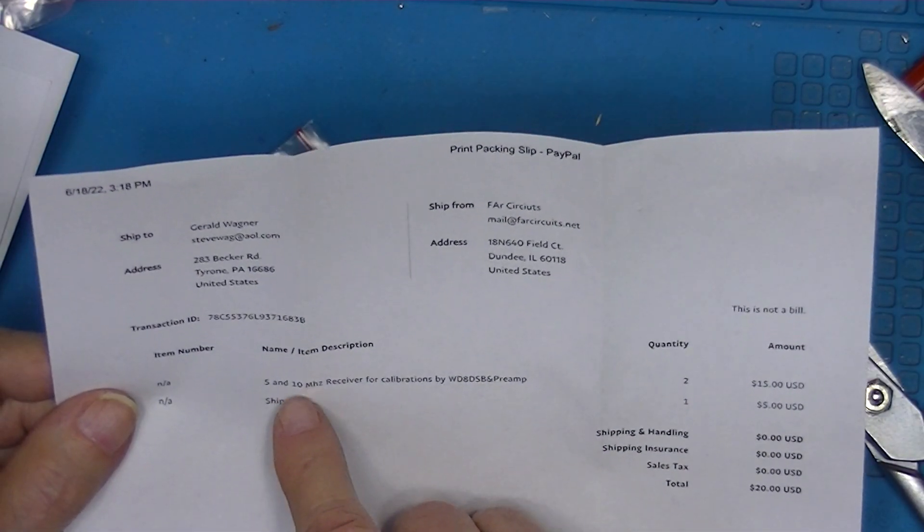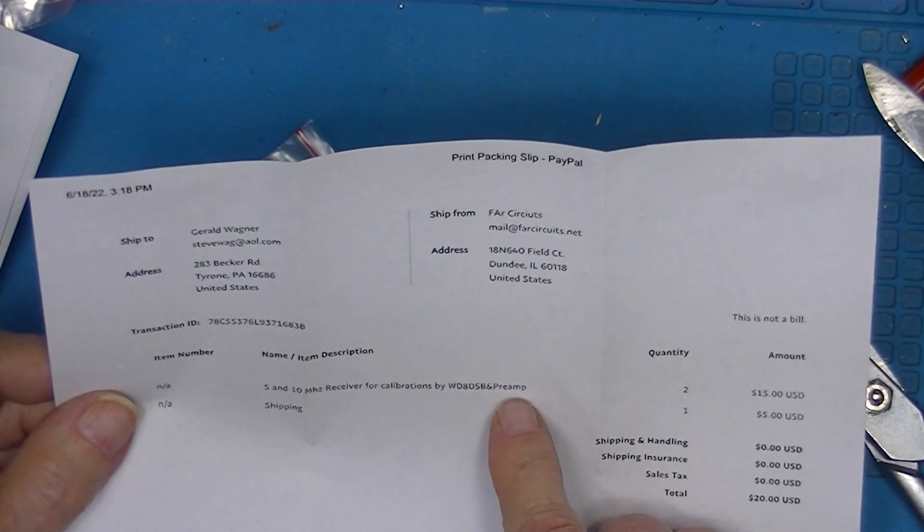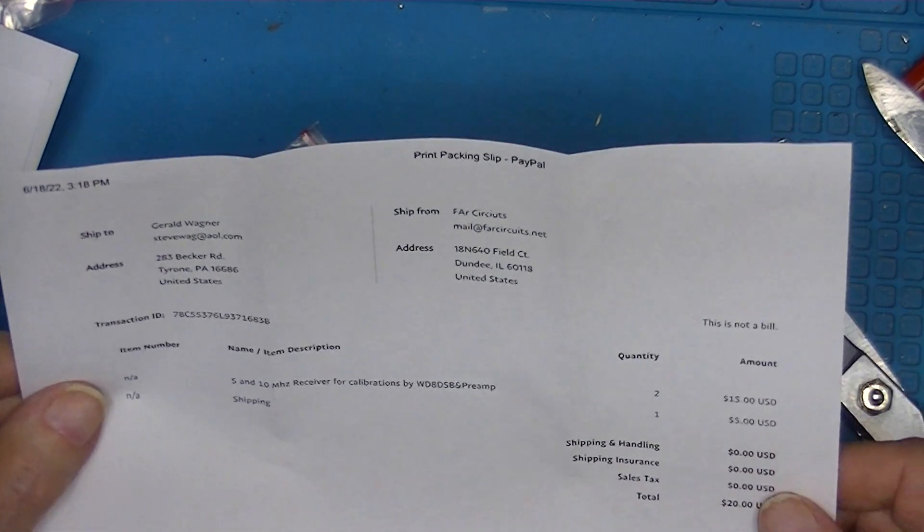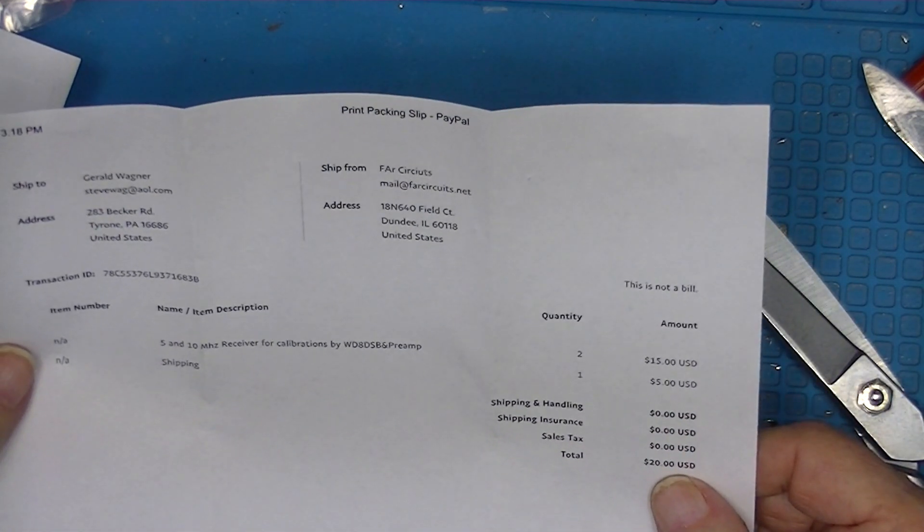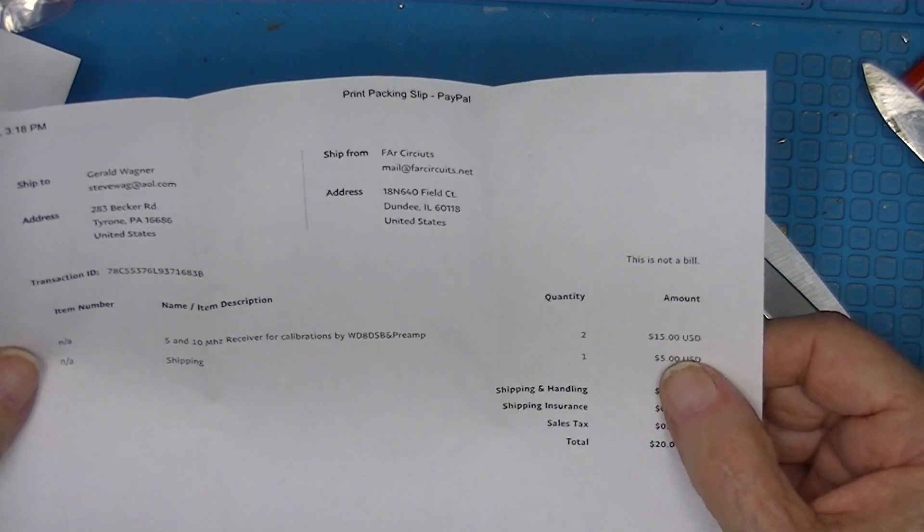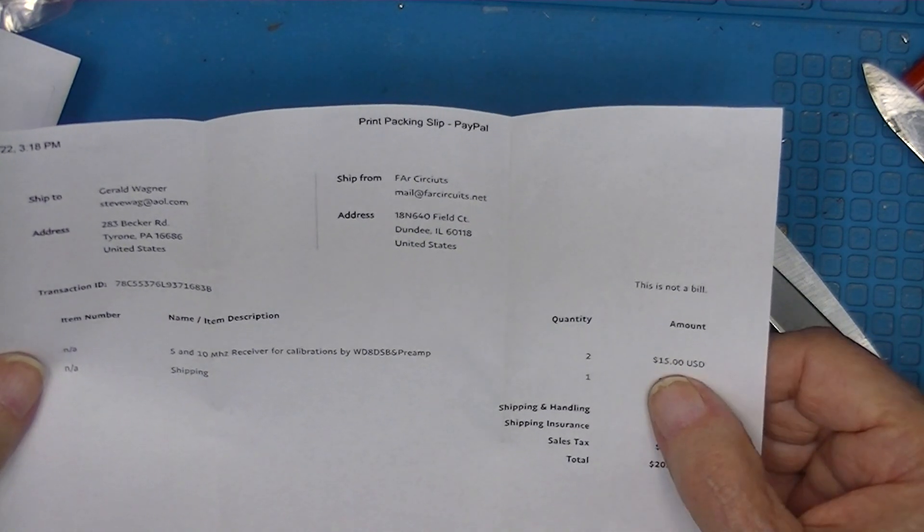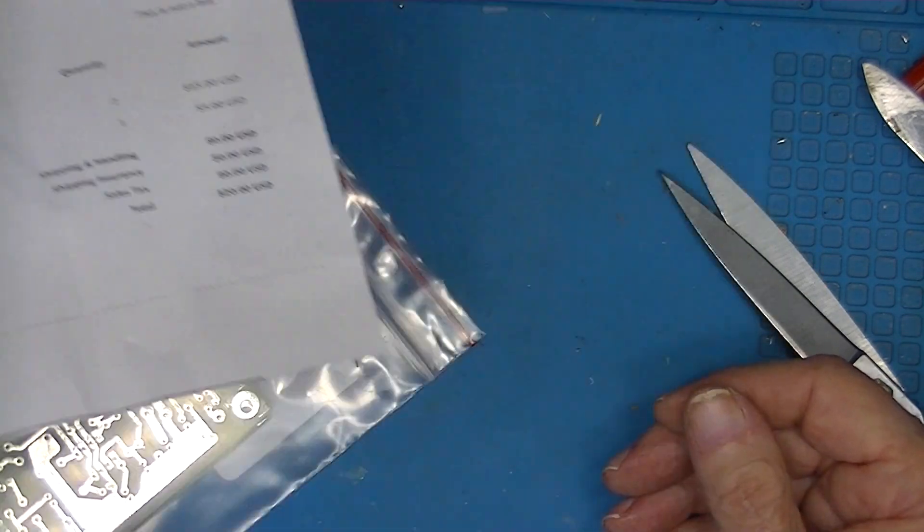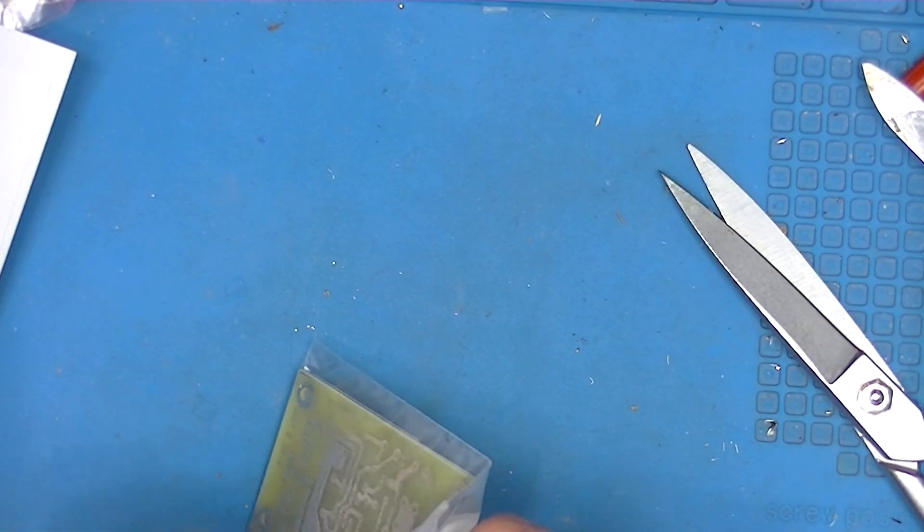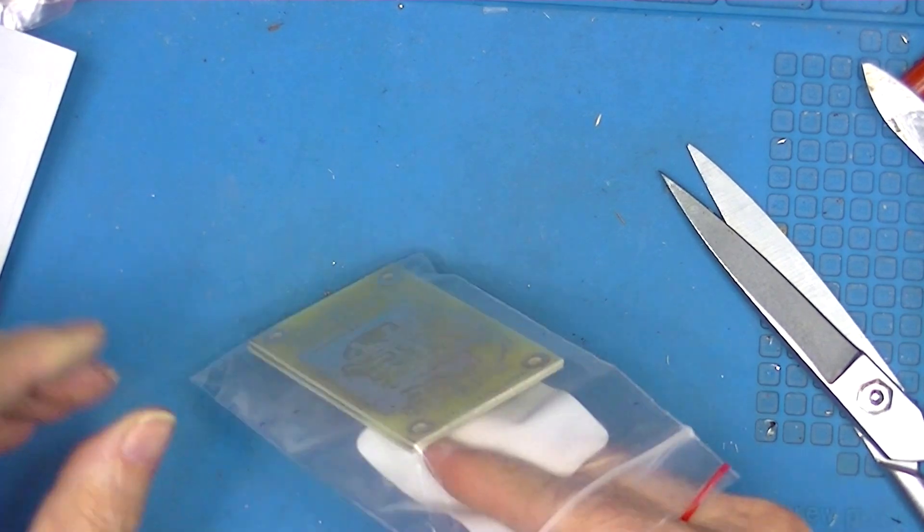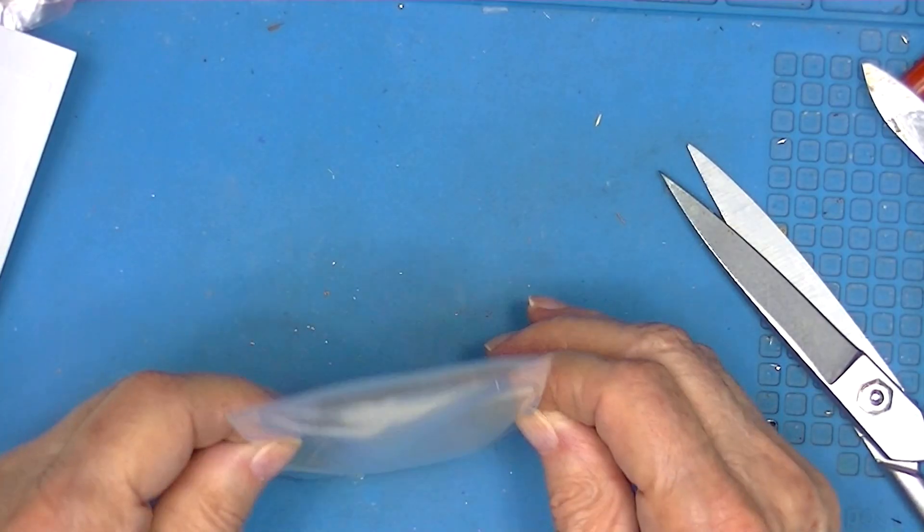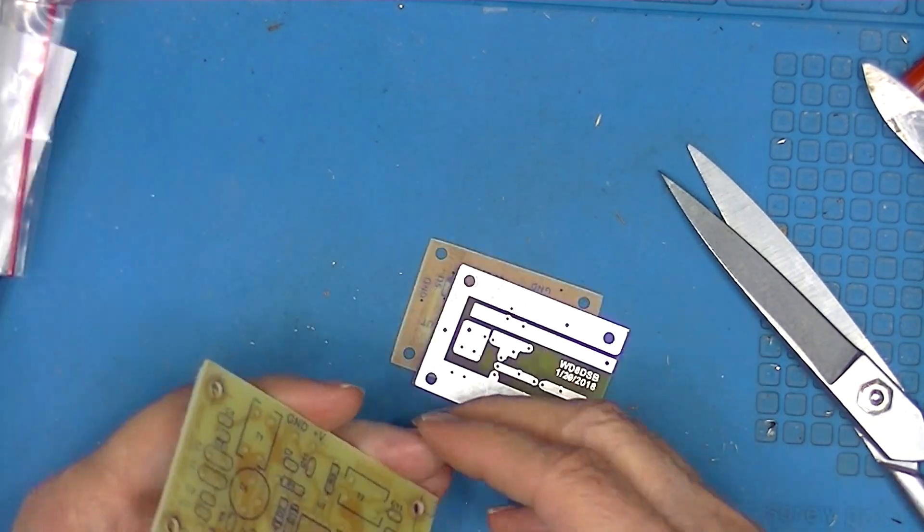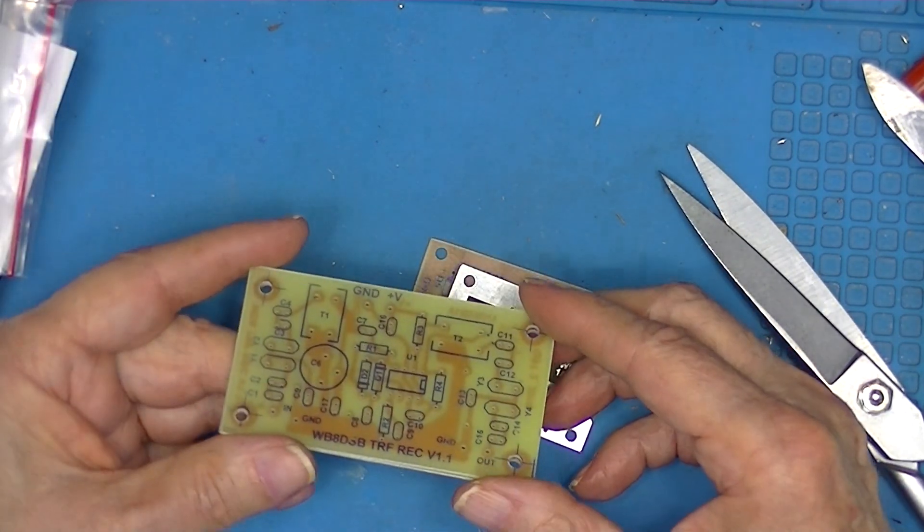The package contained two of the receiver boards and two of the amplifier boards. I paid $20.15 for the four boards and $5 shipping. These are not quite as nice as Chinese boards in that they have no solder mask, but they are certainly serviceable.